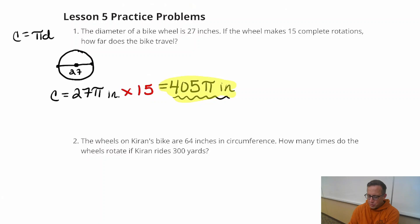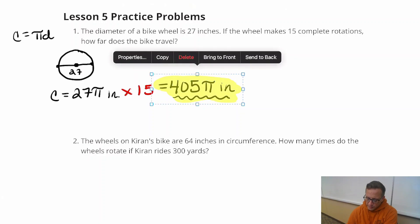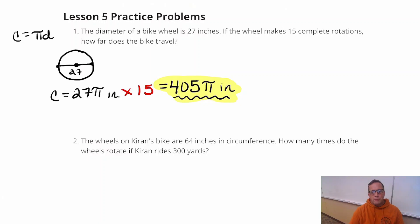So if you're keeping it in terms of pi, your teacher or textbook or whatever, if it's asking you to keep in terms of pi, that's a great answer. That's as far as we need to go. But if we want to be a little bit more clear about how many inches that is, 405 times 3.14 is 1,271.7 inches.